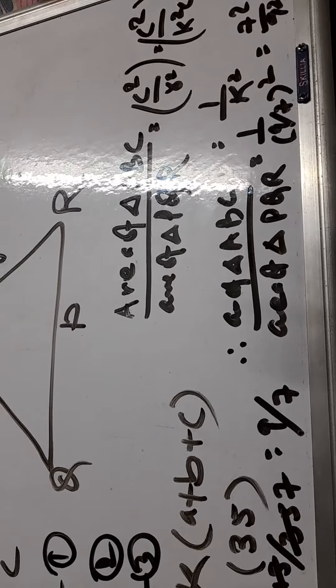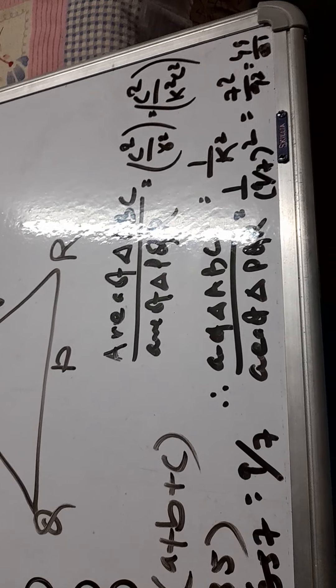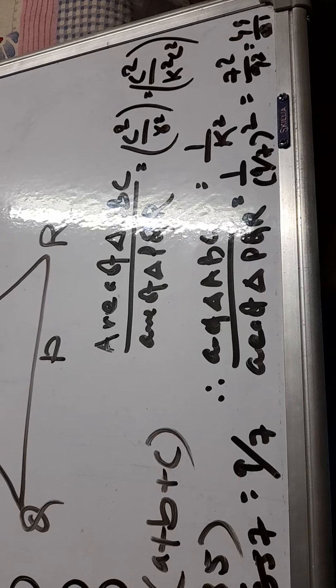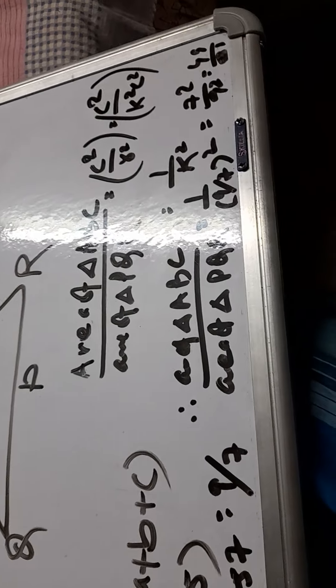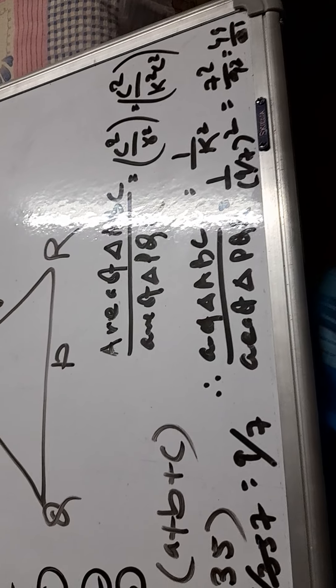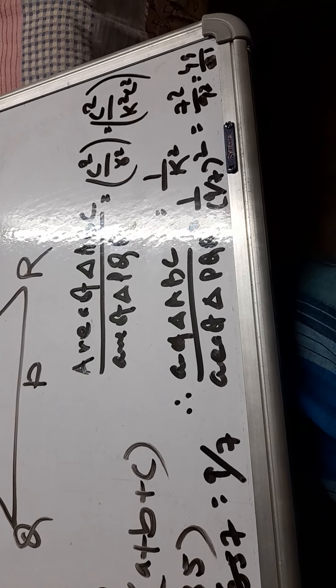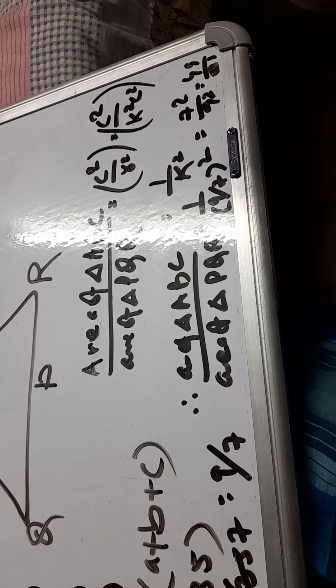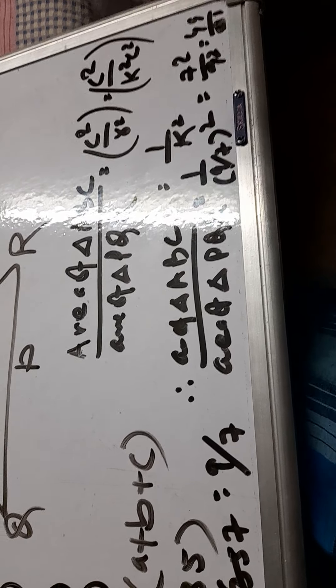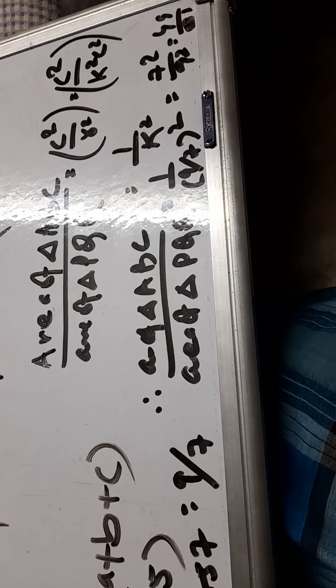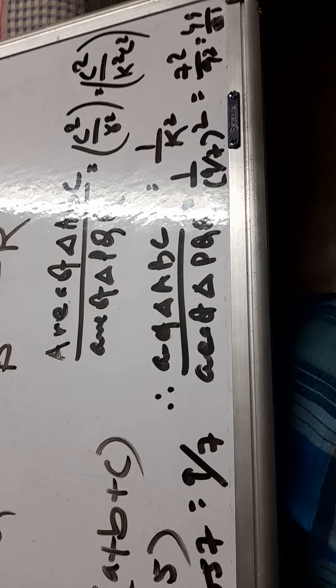As we know, the areas of two similar triangles are in the ratio of the squares of their corresponding sides. So the area of triangle ABC divided by area of triangle PQR will be C squared by R squared. C squared and R equals KC, so C squared by K squared C squared, C squared will be cancelled.